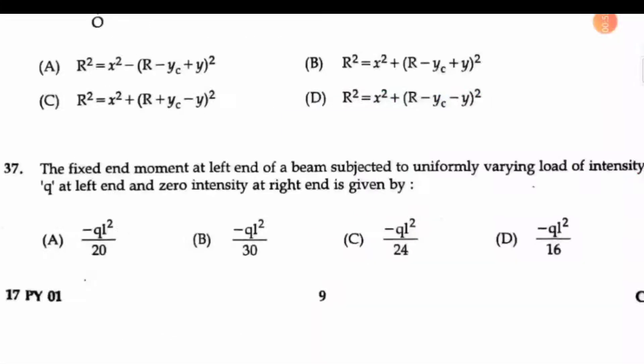Question number 37: The fixed head moment at left end of a beam subjected to uniformly varying load of intensity q at the left end and zero intensity at the right end is given by what?